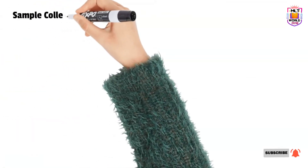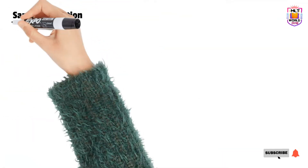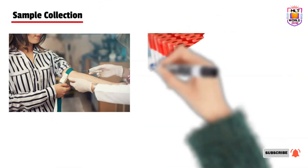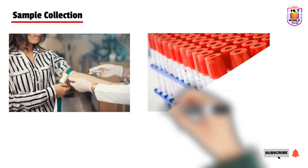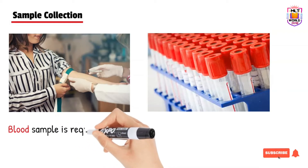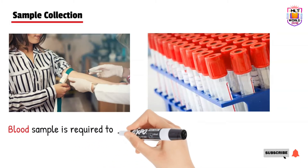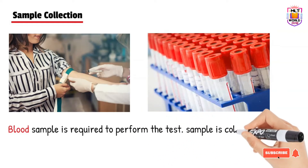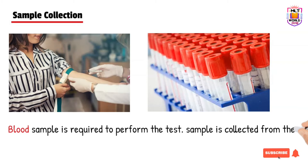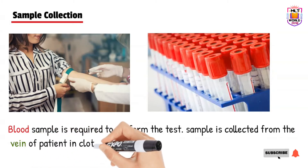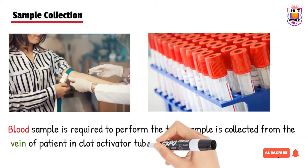For the AFP test, a blood sample is required. We collect blood from the vein of the patient in a clot activator tube — a red cap or yellow gel activator tube. Fasting is not required. When the sample reaches the lab, we centrifuge it and the test is performed using the serum of the patient.